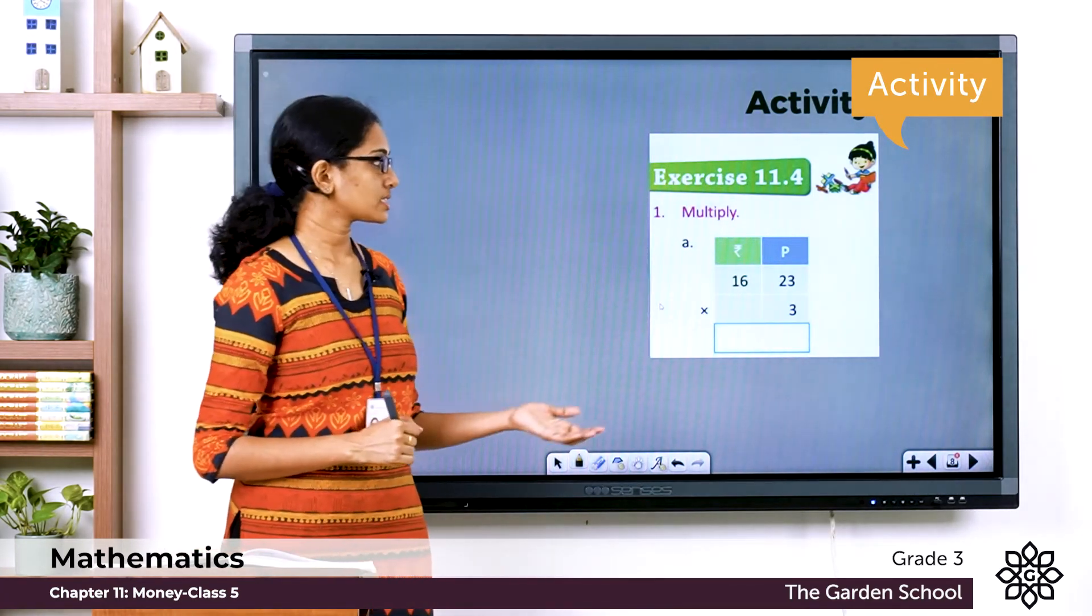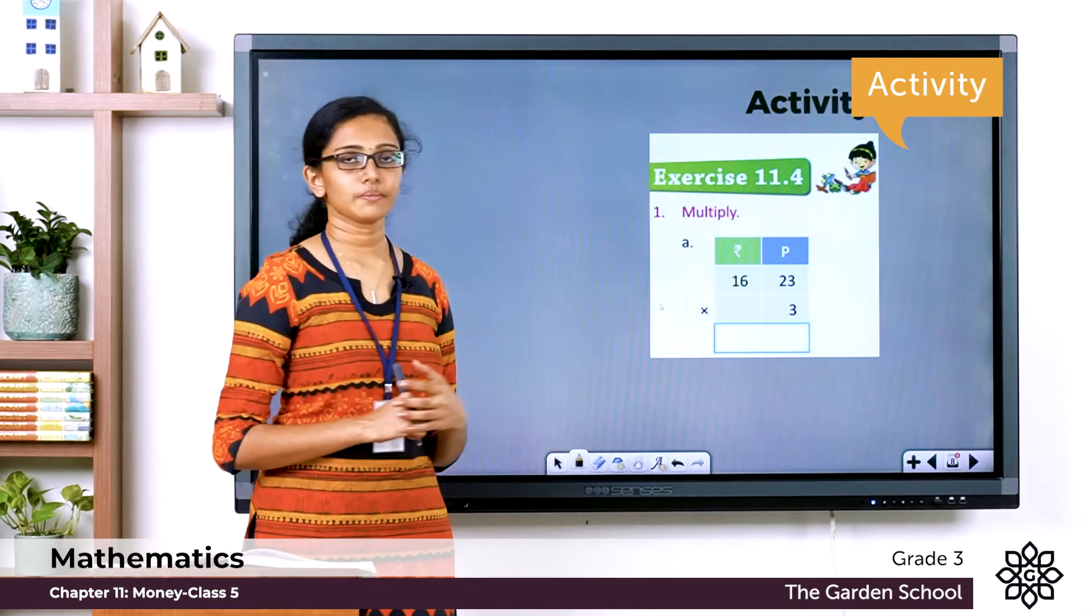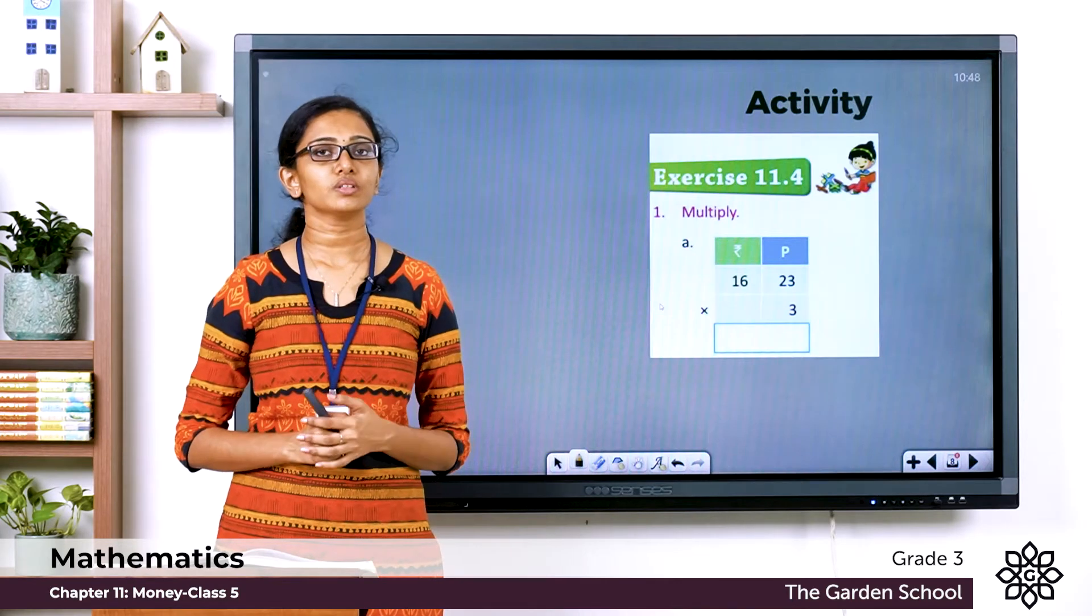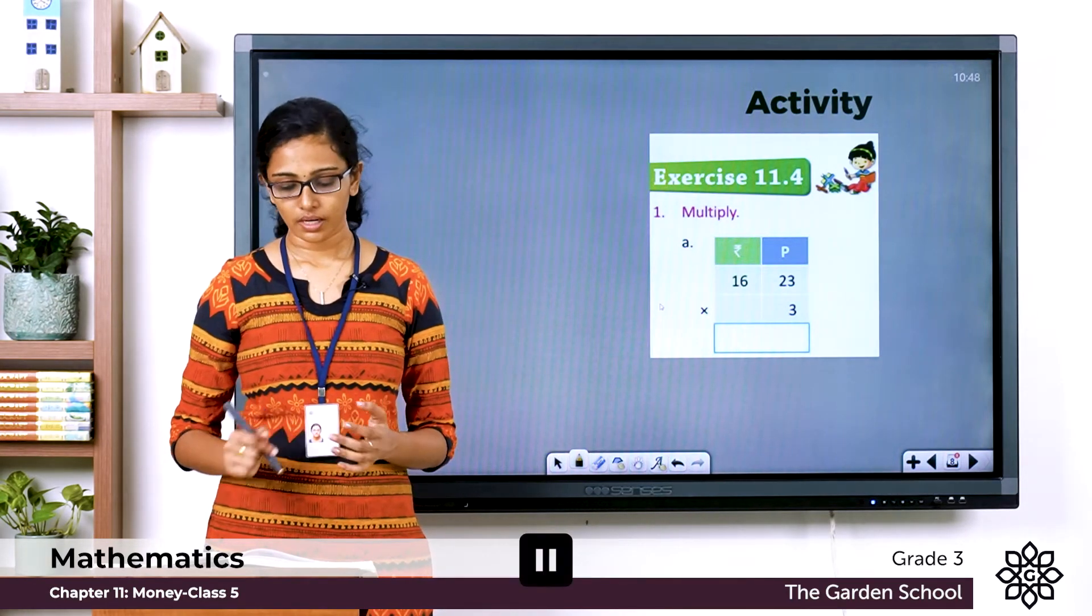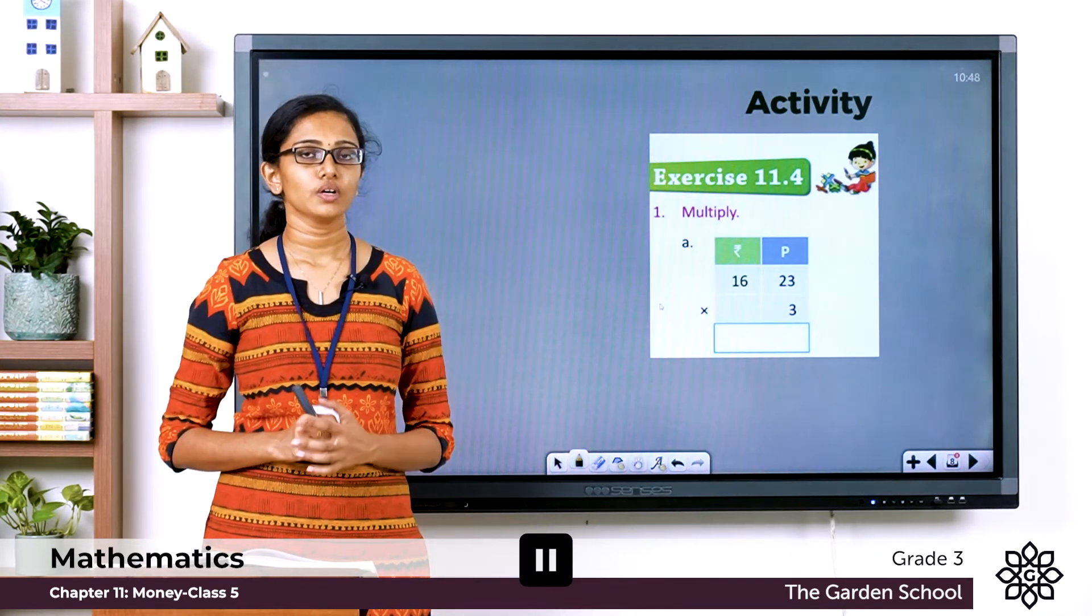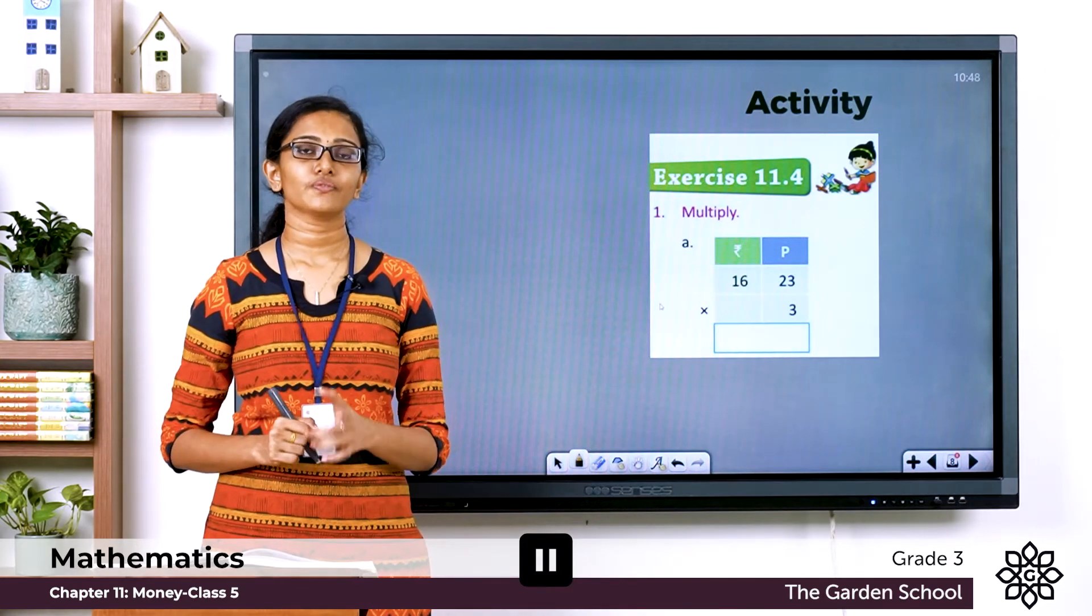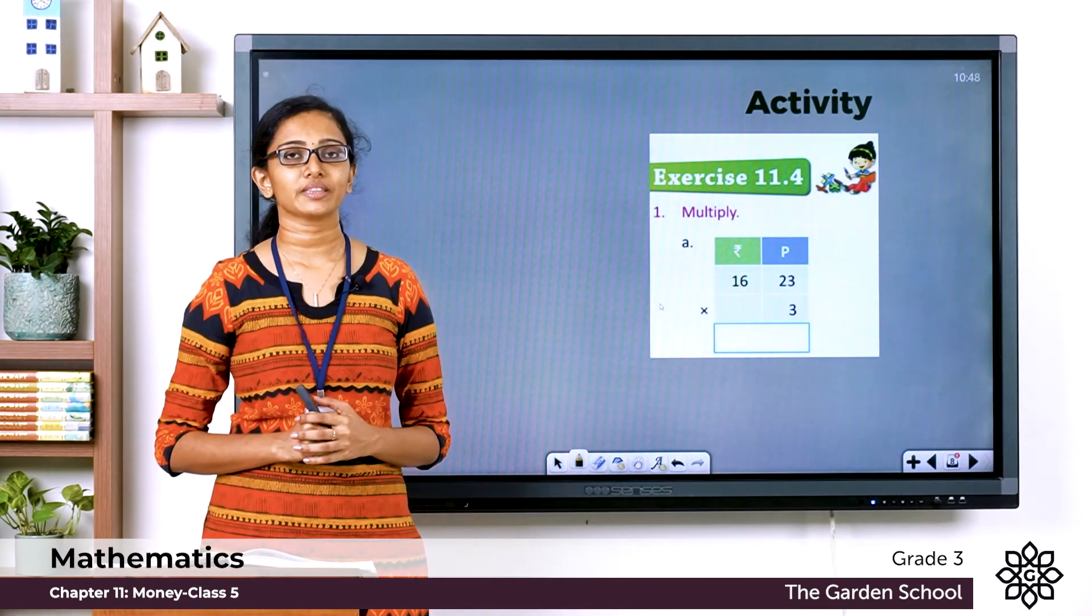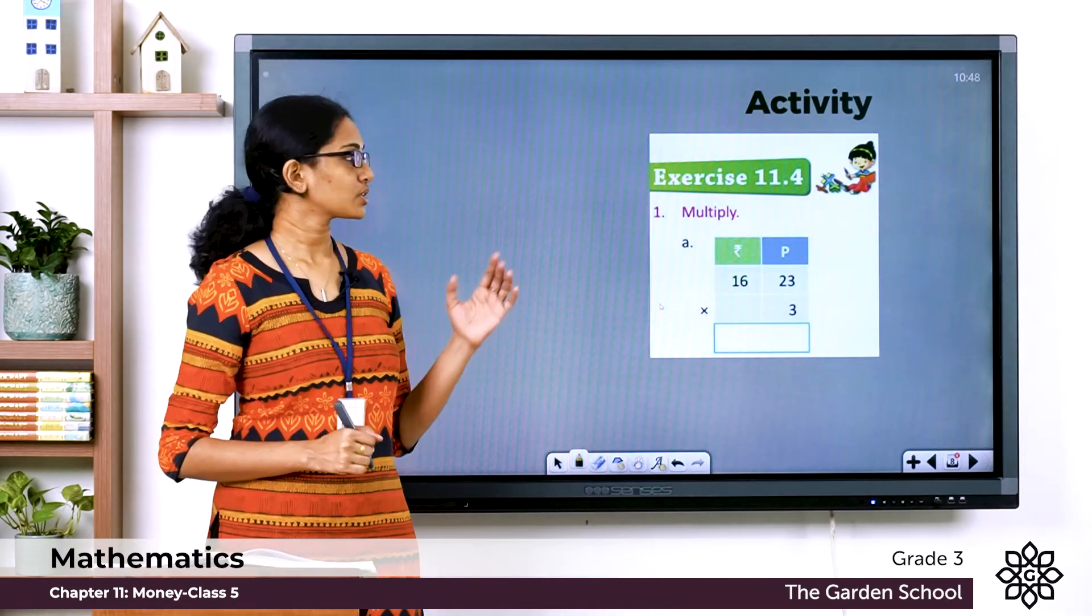You have the question 16 rupee 23 paisae. It has to be multiplied by 3. You can do this as an activity now. You can work out the question in the textbook itself. Please pause this video, finish the exercise and come back. Hope you are done with that. Now let's see how we can do the multiplication.